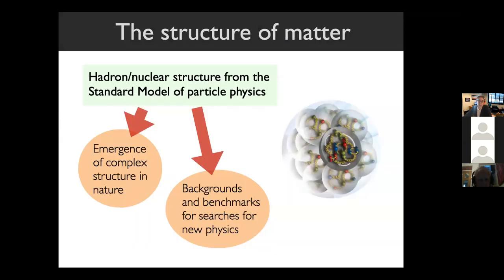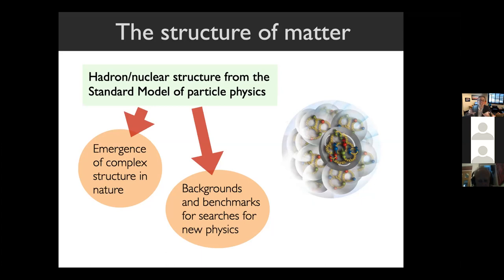I'm talking about the challenge of studying the structure of matter from our understanding of the most fundamental quark and gluon degrees of freedom in nature, which are encoded in the standard model of nuclear and particle physics. We want to do this both to understand the emergence of nuclear complexity — how the structure of a proton all the way to the structure and interactions of nuclei come from our fundamental theory — but also to constrain backgrounds and provide benchmarks for searches for new physics.